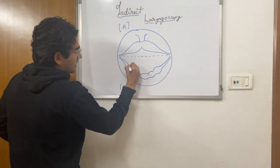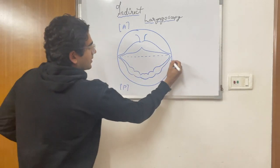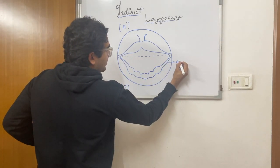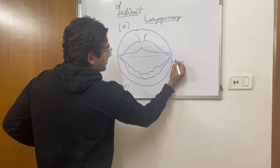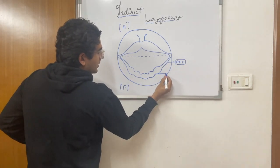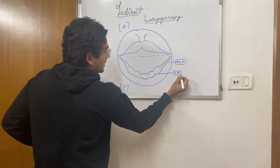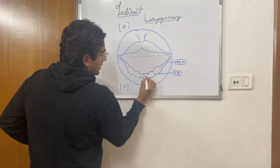Something like this. And these projections, they are termed as the aryepiglottic folds. Here you have the cricoarytenoid joint, and this is the post-cricoid region.